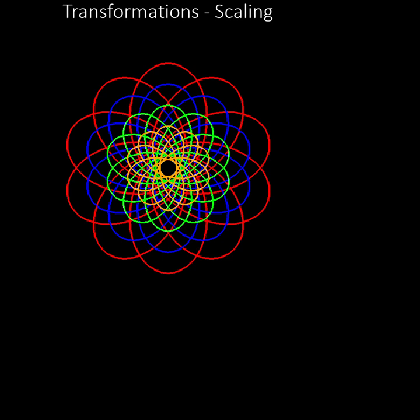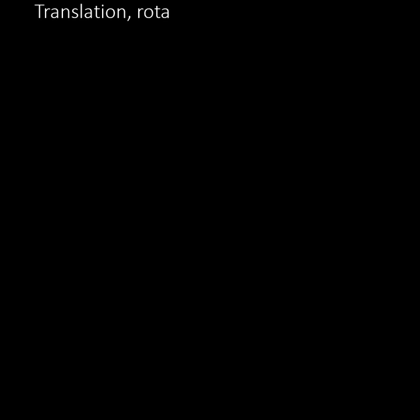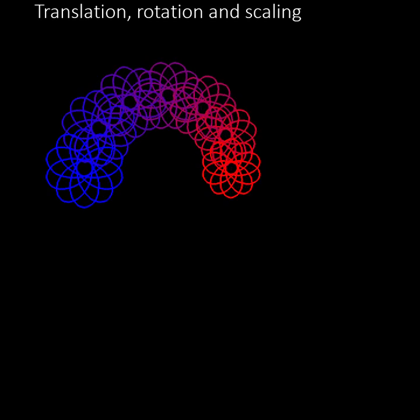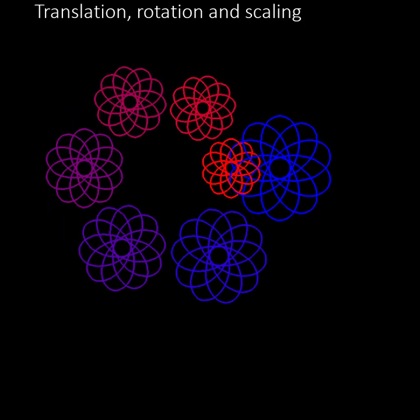We can apply different transformations to a curve at the same time. Here we see a pattern created by making seven copies of the original curve, and translating, rotating, and scaling each one by different amounts to create a spiral pattern.